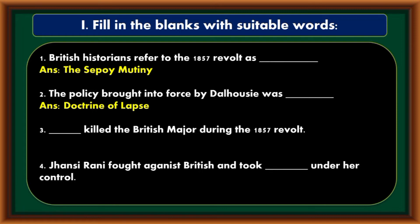Mangal Pande killed the British major during the 1857 revolt. Jhansi Rani fought against the British and took Jhansi under her control.